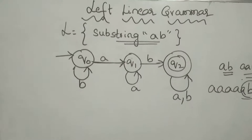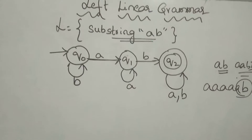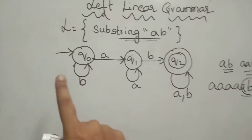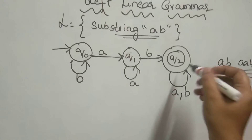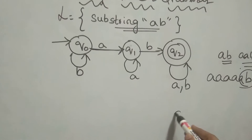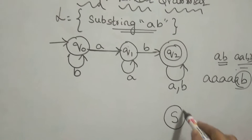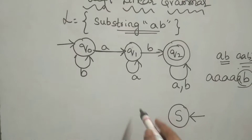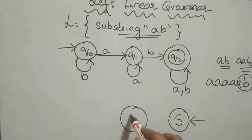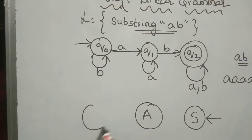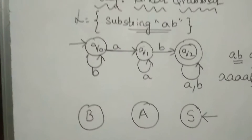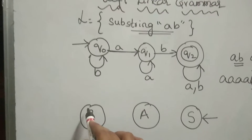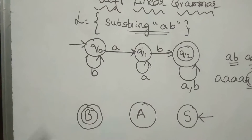After this, we set up the left linear grammar design. The last state is then considered the starting state. This is the next state. This is the next state. This is the last starting state, which is the final state.